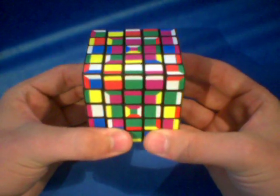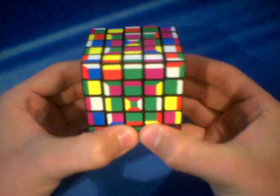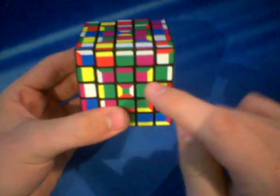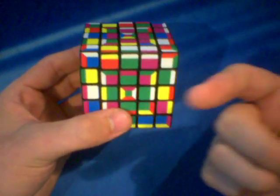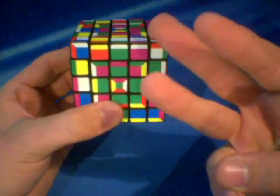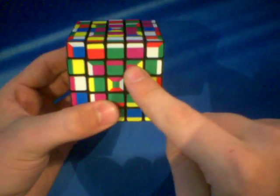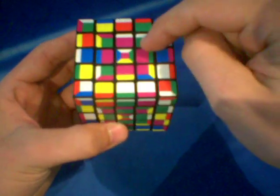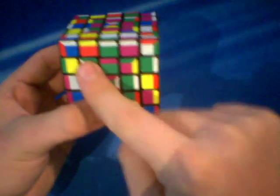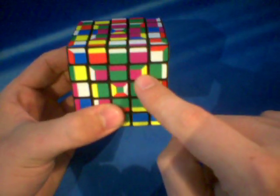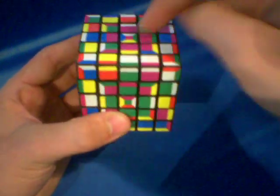You're going to have to use the cycle pattern that we talked about in the 4x4 tutorial. Basically what that is is you're going to be cycling three pieces. You're going to be cycling this piece, it's going to come up here. This piece is going to come down here, and this piece is going to come around right there. So you're cycling it like that.